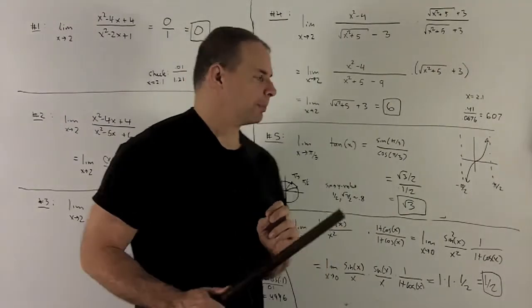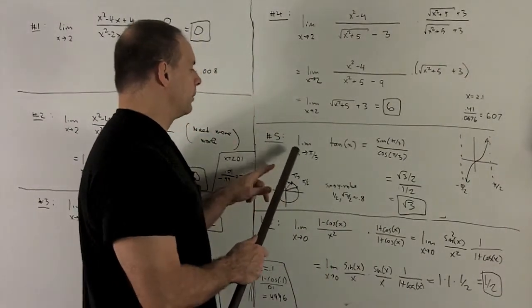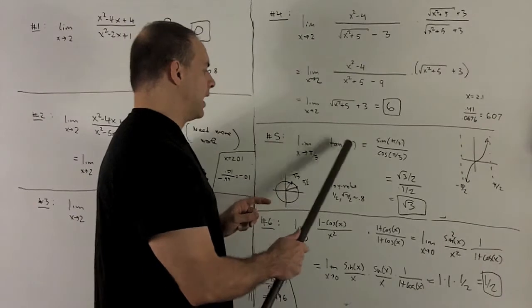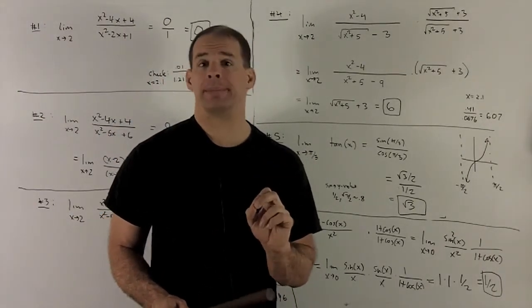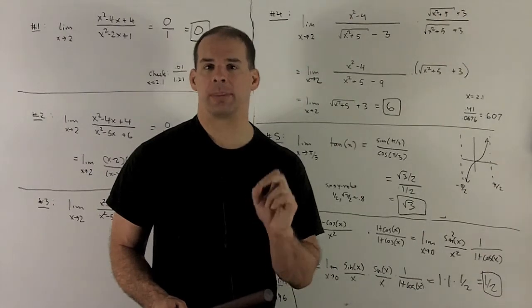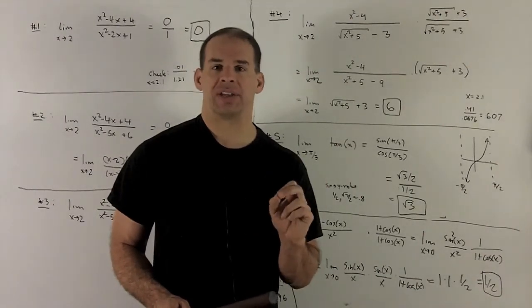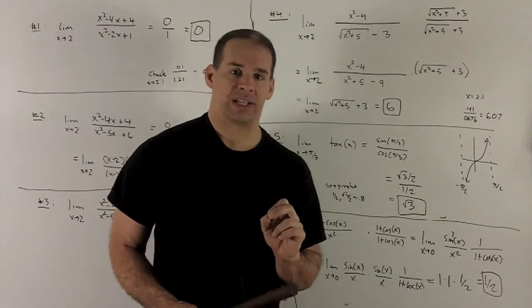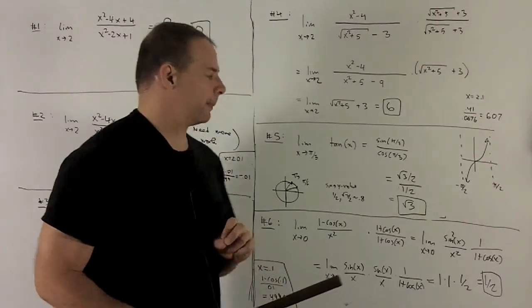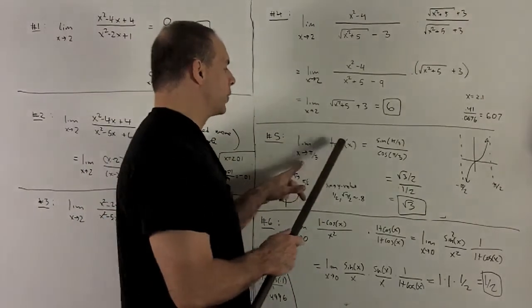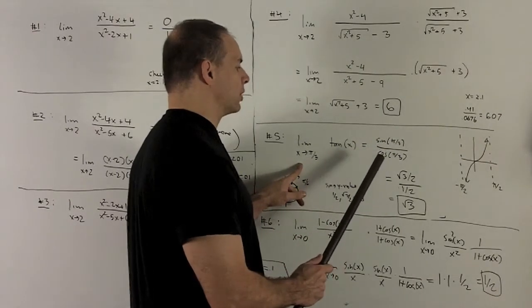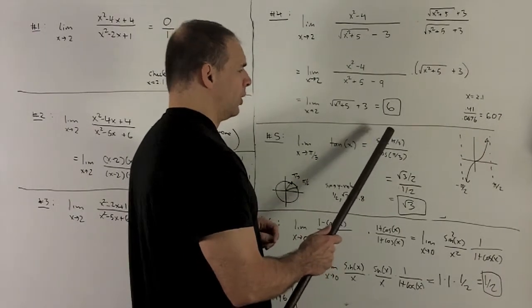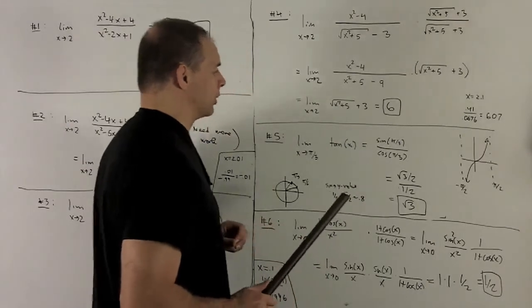Let's try some trig limits. So let's do limit x goes to pi over 3 of tan of x. So what's the rule for your trig functions? Evaluate. If a number comes out, you're fine. If a number doesn't come out, say you're dividing by 0, then it does not exist. So let's see what we get. So if I put pi thirds into tangent, what are we going to get? It's going to be sine of pi thirds over cosine pi thirds. And I got to figure out what the sine and cosine for pi thirds are going to be.